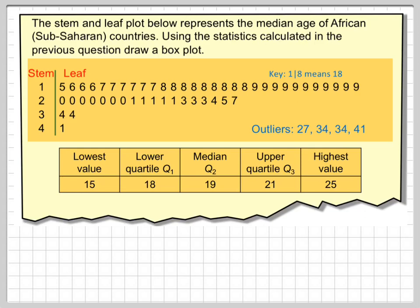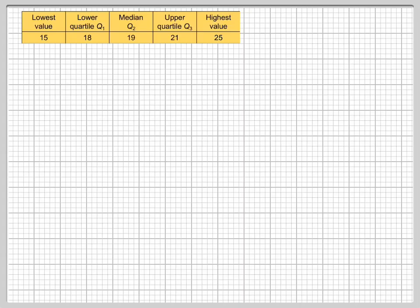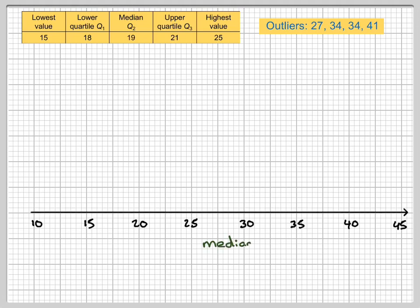So using that information we will now draw a box plot. So there's the information. It's best to do it on some sort of graph paper. These are the outliers. Okay, if we draw a straight line here, draw a horizontal axis, label the axis. These are the median age.